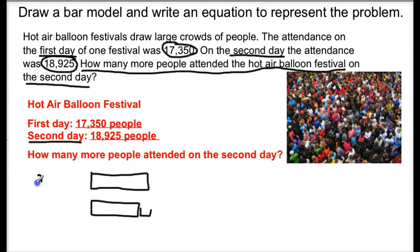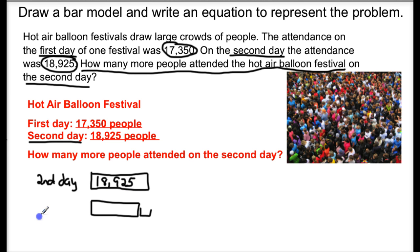So we labeled our bar model — this represented the second day — and we inserted the larger value, 18,925. The second bar model, the shorter one, represented the first day, and we inserted the value 17,350 to represent that bar model.